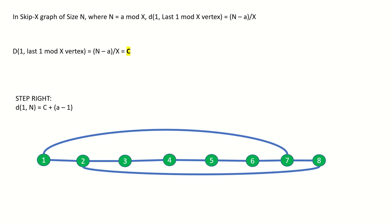Now using the step right method to reach our last vertex, the distance is c plus a minus 1, as a minus 1 is just the number of times we need to step right upon reaching our last 1 mod x vertex. And now using the step left skip right method, the distance is c plus x minus a plus 2.